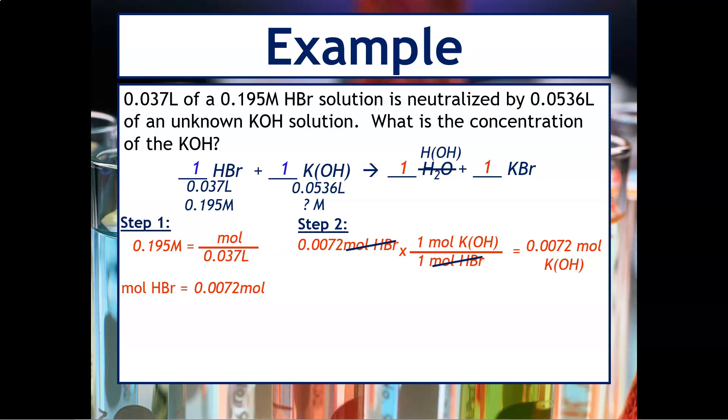Now we need to calculate what the concentration is by knowing the volume that we added. So step three would be to use that 0.0072 moles and then divide it by the volume. And so when you do this calculation, you should get 0.13 molar potassium hydroxide.